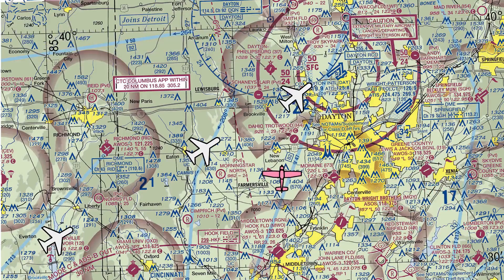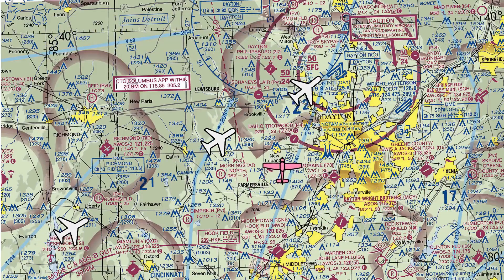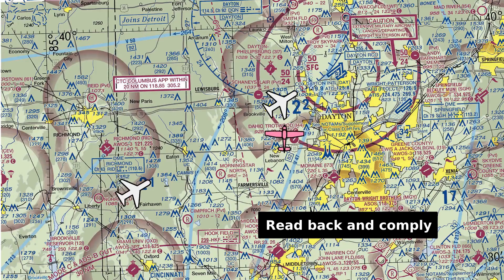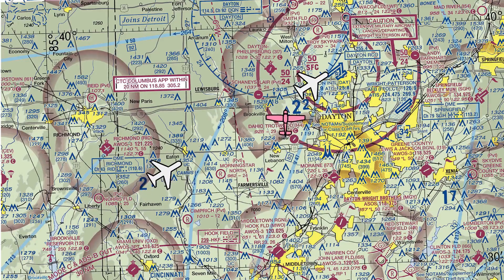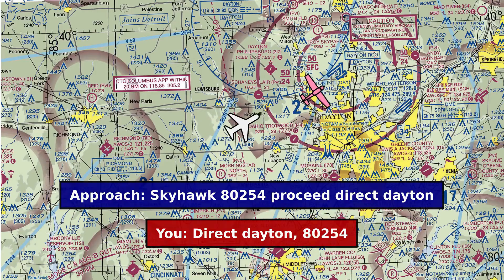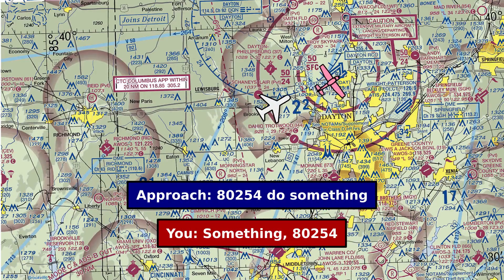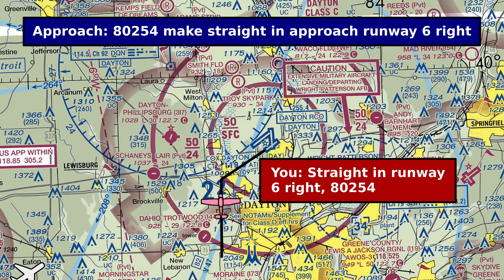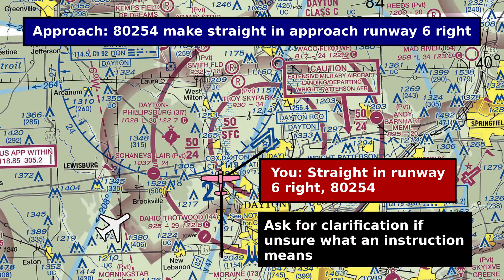At this point, what the controller's doing is sequencing you in with the other traffic that's going in and out of the airport. Your job is to read back and comply with any directions that he gives you. For example, the controller might say proceed direct Dayton if there's no other traffic in the area, or if there is, he'll give you instructions to work you in. Whatever you're told to do, just read it back and do it, and if you have any questions, don't hesitate to ask for clarification.